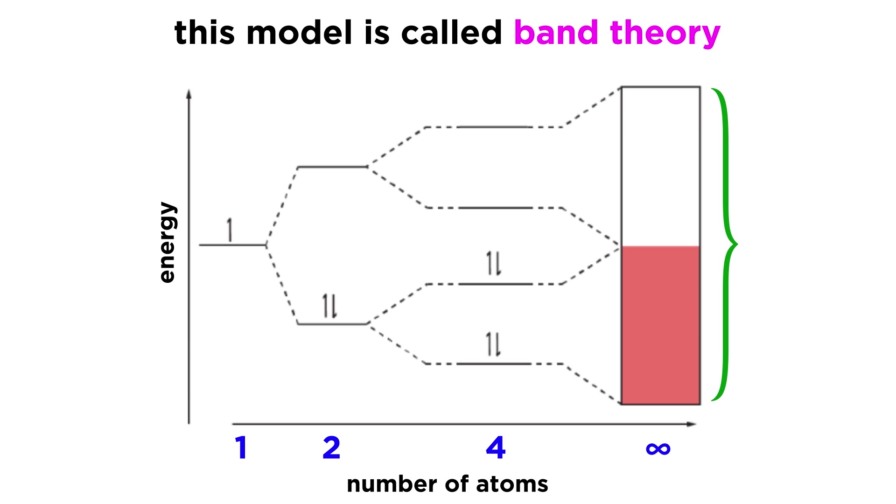There are some important things to note about this model, which we call band theory. First, the atoms are held together by electrons in the lower energy bonding orbitals, as these are filled first, while the higher energy antibonding orbitals remain vacant.